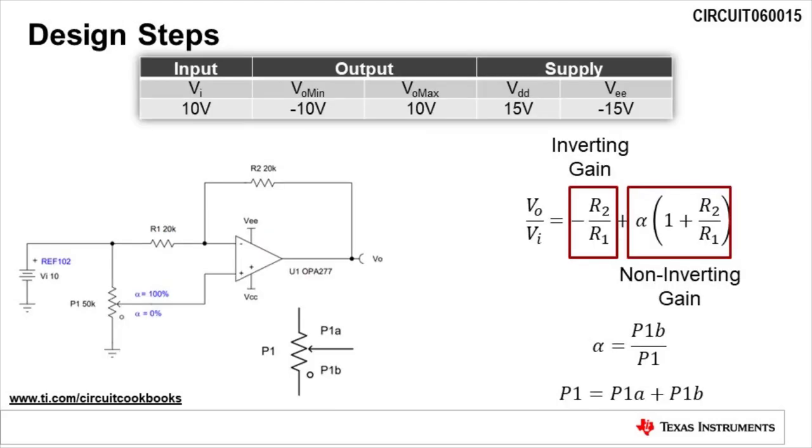This slide depicts the design goals and transfer function of the circuit. The design goal for this circuit is to create an output voltage from negative 10 volts to 10 volts with an input voltage of 10 volts. The potentiometer can be set between 0% and 100% to give the desired reference voltage. The supply voltages used in this design are 15 volts and negative 15 volts.